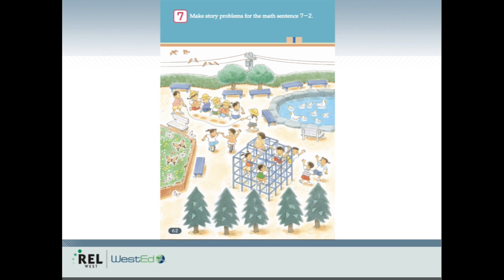Here's a second example that supports students' understanding of subtraction: make a story problem for the math sentence 7 minus 2. The picture could enable students to show two different kinds of subtraction. For example, there are seven trees and two are rounder trees — so how many Christmas tree-like trees are there? That's seven minus two. Another way to think of it is the benches: there are seven blue benches and two white benches, so what's the difference? You can see how this kind of picture could enable students to come up with many different kinds of story problems.